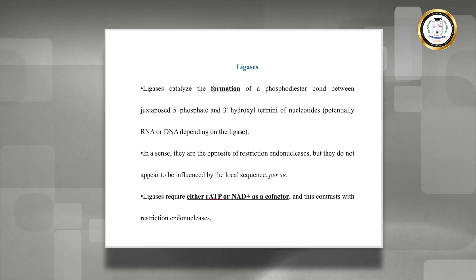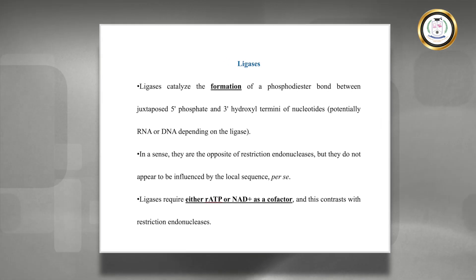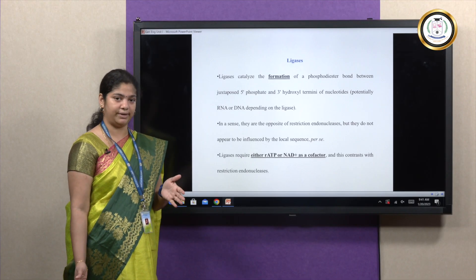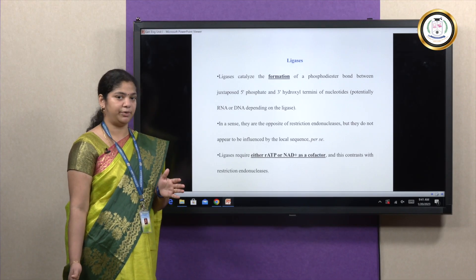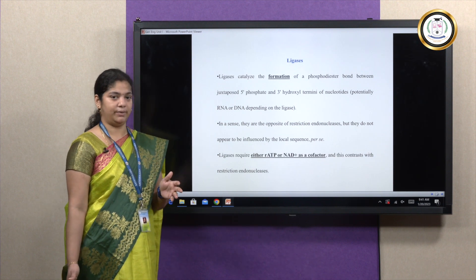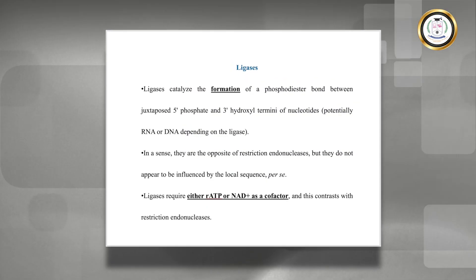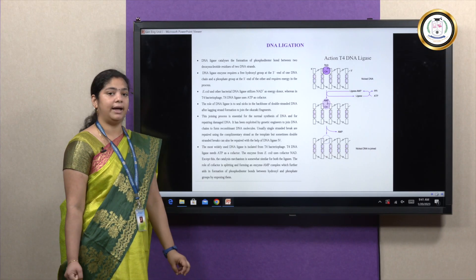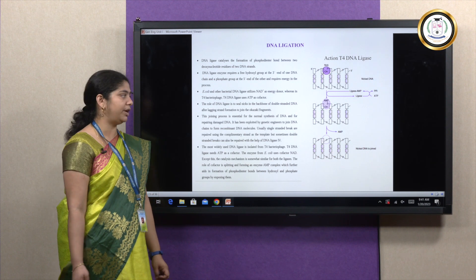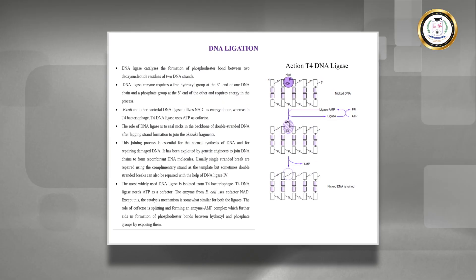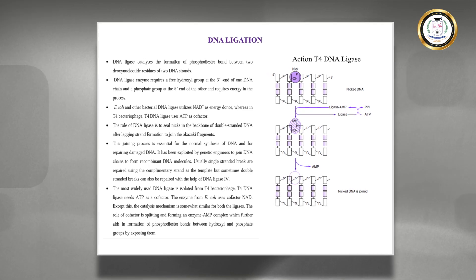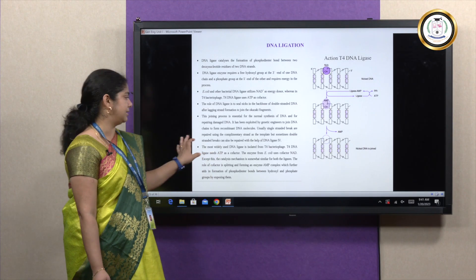The next important enzyme is ligase. The ligase is used in joining the sequence—it forms phosphodiester bonds between two cut sequences, two base pairs in a plasmid vector or any DNA sequence. The major aim is to join the sequence that is cut by a restriction enzyme. You have a major DNA ligase which is used commonly, that is T4 DNA ligase, and this DNA ligase can easily nick the joints—it creates a phosphodiester bond.